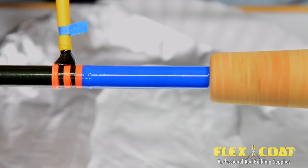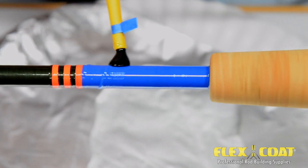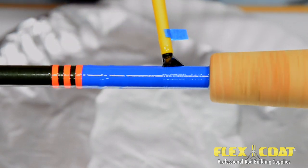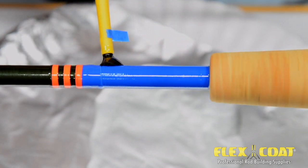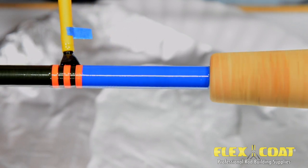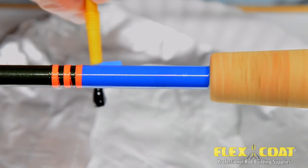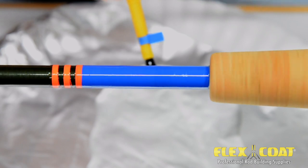This technique will give you supreme control over the movement of the flex coat finish during this critical first saturating coat. Having a fast gear motor of about 1 to 200 RPMs is really nice to have to get your finish to smooth out flat, quick and easy.